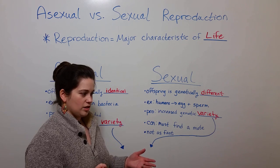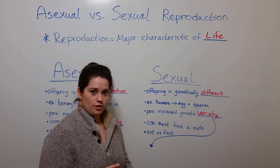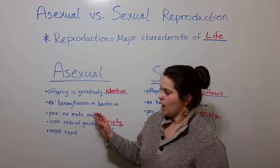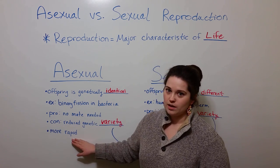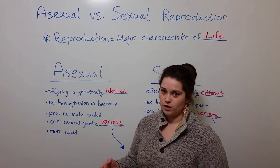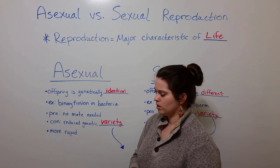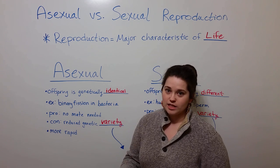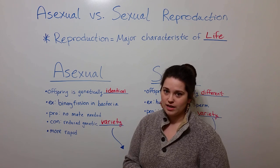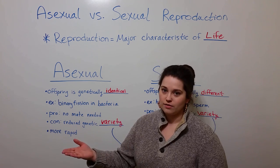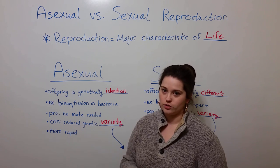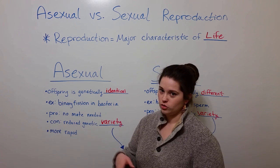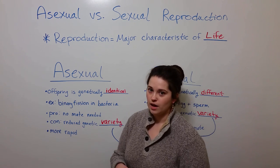For example, in human populations, the generation time is about 20 to 30 years between generations. With asexual reproduction, however, it's much more rapid. Bacteria can divide and reproduce very quickly. For example, the generation time of E. coli in good conditions is as little as 20 minutes. In fact, E. coli cells can start a second round of binary fission before the first round has even finished, so it's a much more rapid process, which can lead to great numbers in a short amount of time.